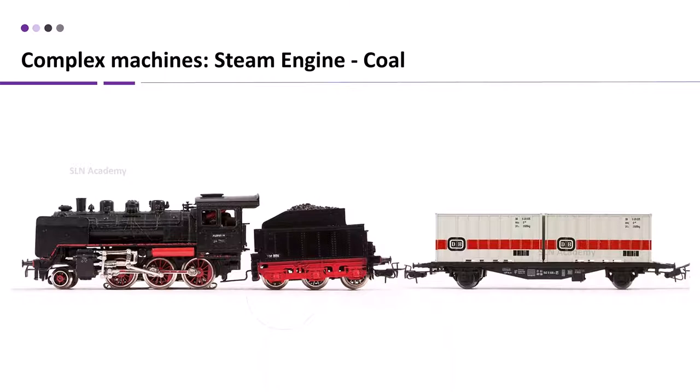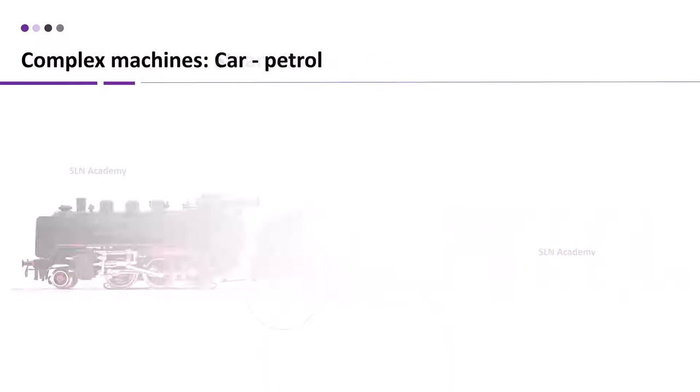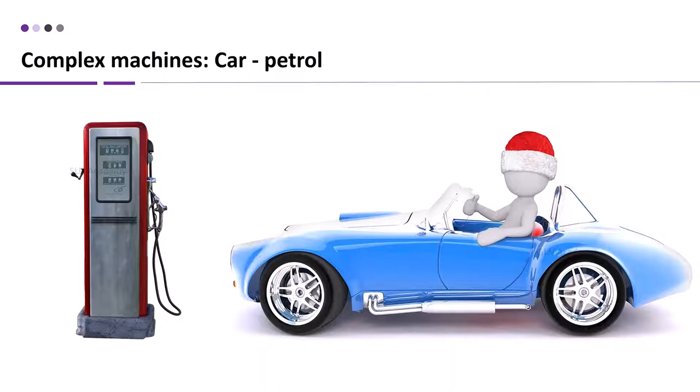Complex Machines. Different machines are run by different kinds of fuels in our daily life, such as coal helps in running of steam engines. Petrol helps in car and diesel in trucks.